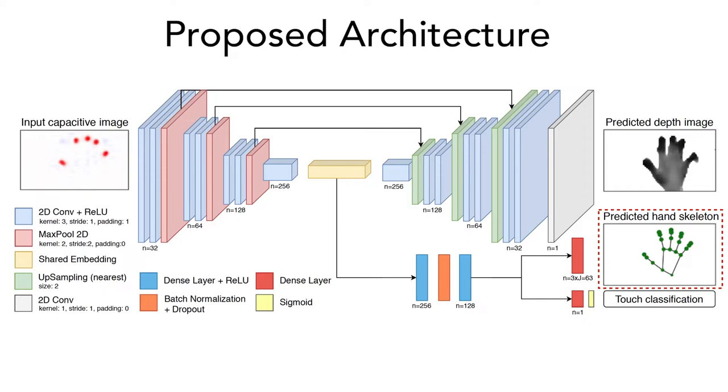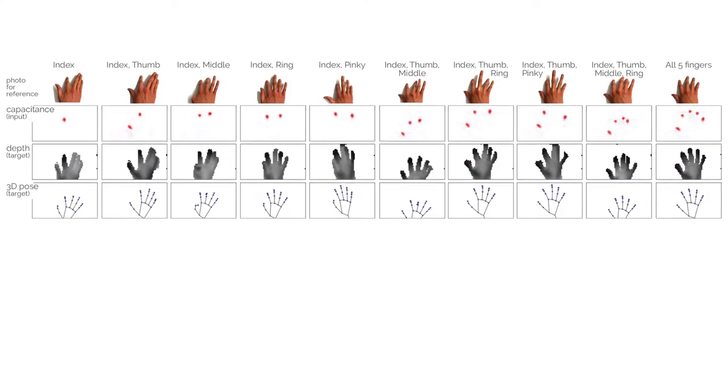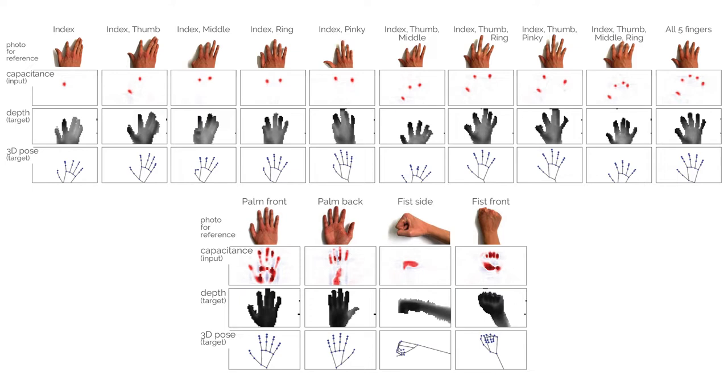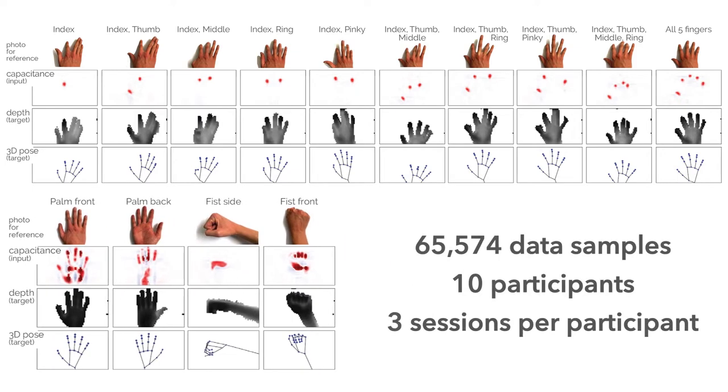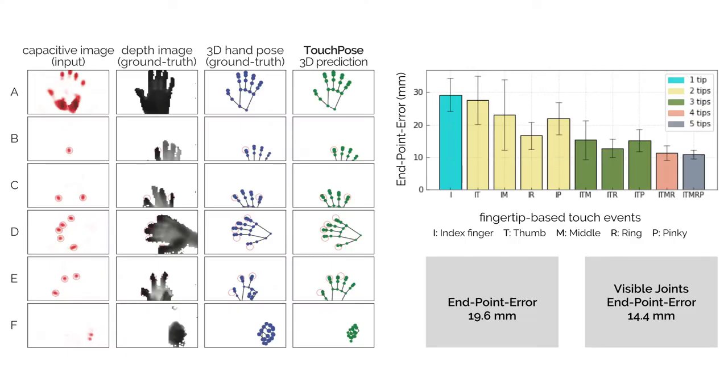To improve the generalizability of our model, we train it across modalities that capture depth, skeletal hand pose, and validity of touch events. We also introduce the first cross-modal dataset with over 65,000 sets of capacitive images, depth maps, and annotated 3D hand poses from 10 participants over a variety of input poses.